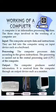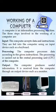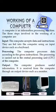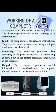Then comes processing — the computer processes data according to the given instructions. The processing is carried out in the central processing unit. The last step is output — the computer produces useful information, which is received from the computer through an output device such as a monitor.